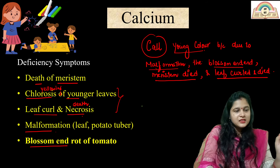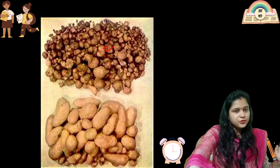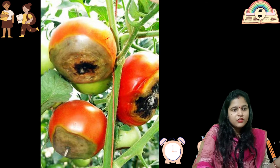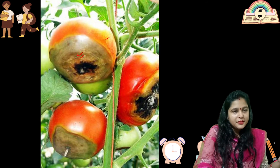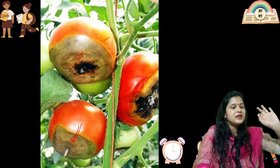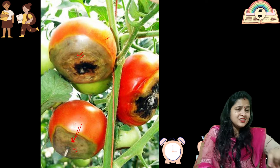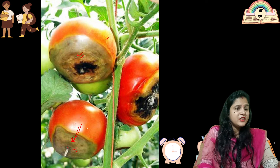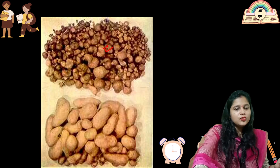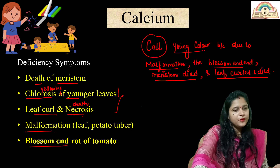The last deficiency symptom is blossom end rot of tomato. You can see the tomato in the diagram — at the lower end of the fruit, rotting is occurring. This is blossom end rot of tomato.